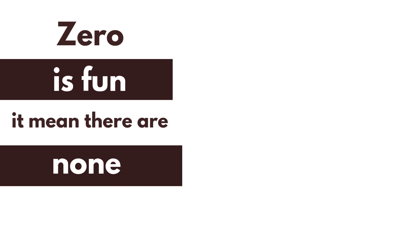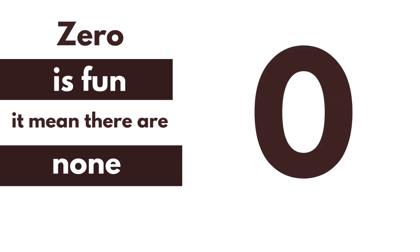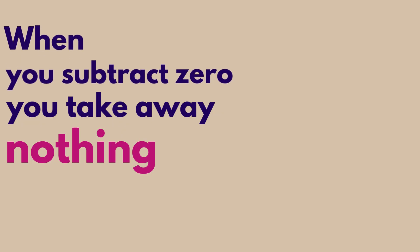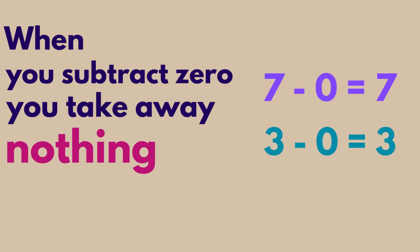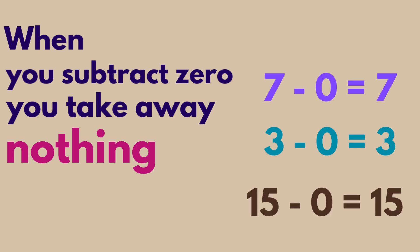You see, zero is fun. It means there are none. If zero means there aren't any, then that means when you subtract zero, you take away nothing. Let's see some subtraction problems. Seven minus zero equals seven. Three minus zero equals three. Fifteen minus zero equals fifteen.